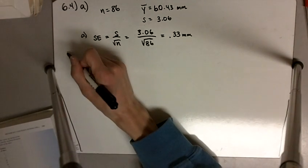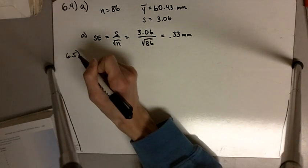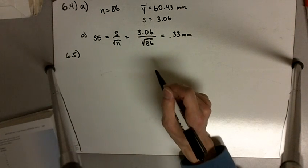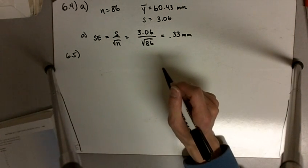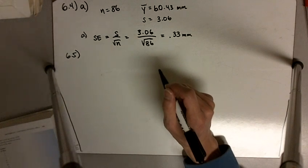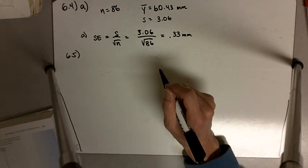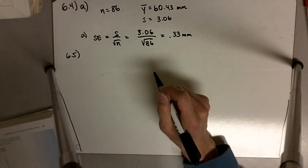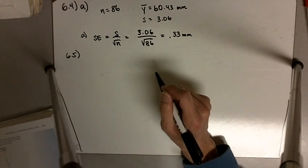I'm just going to skip ahead to 6.5, and 6.5 says refer to the mouse data of exercise 6.4. Suppose the zoologist were to measure 500 additional animals of the same population. Based on the data in exercise 6.4, part A is what would you predict to be the standard deviation of the 500 new measurements?